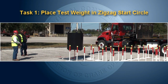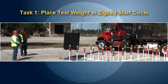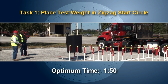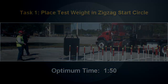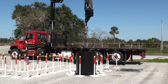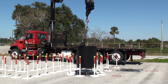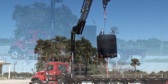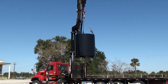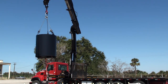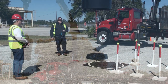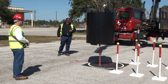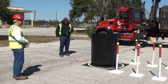Task 1: Place test weight in zigzag start circle. Optimum time: 1 minute 50 seconds. At the examiner's indication to start, at which point timing will begin, lift the test weight from designated area 1 and bring it to the zigzag circle labeled designated area 2. Timing will end once the test weight and chain have been placed fully inside the designated area and you receive the stop signal from the examiner.